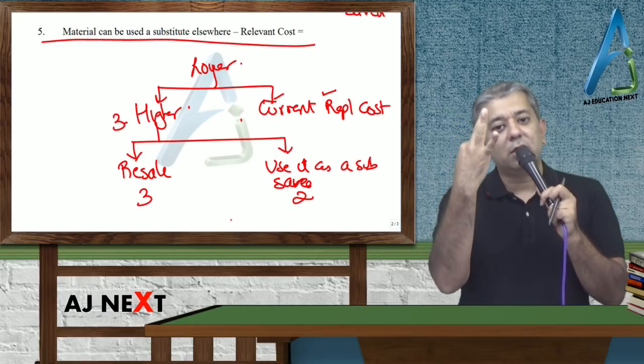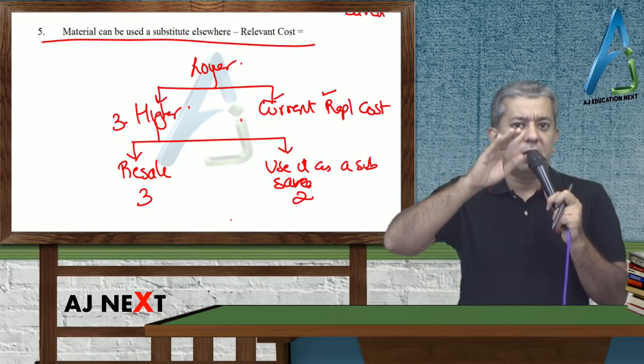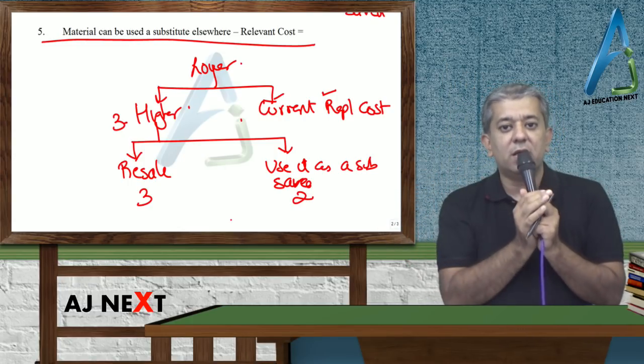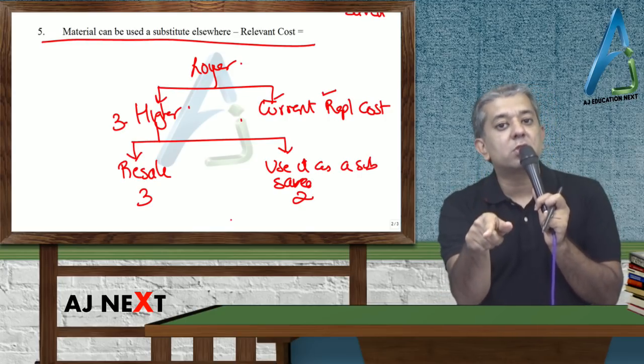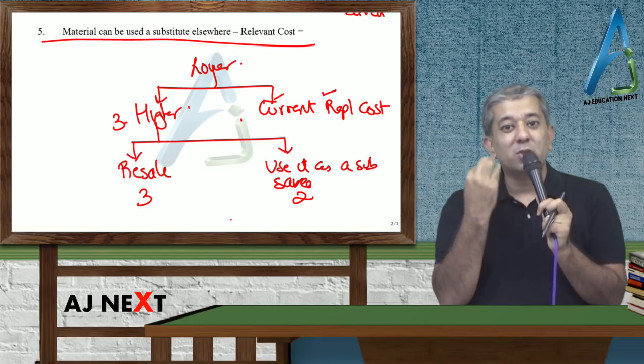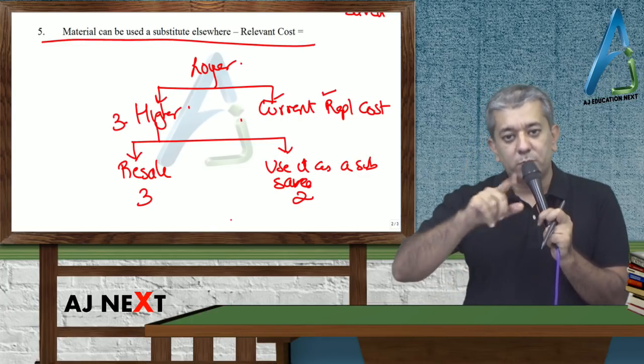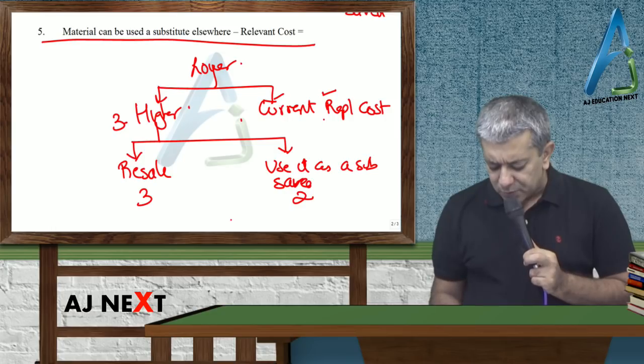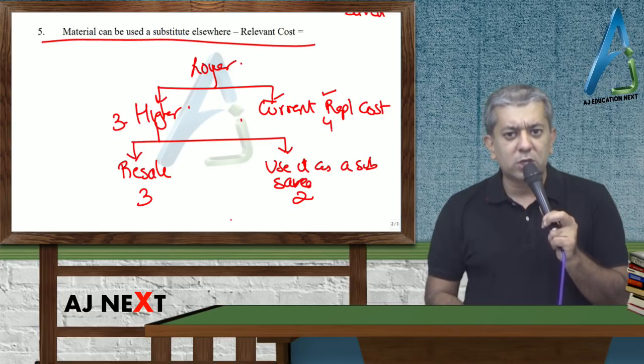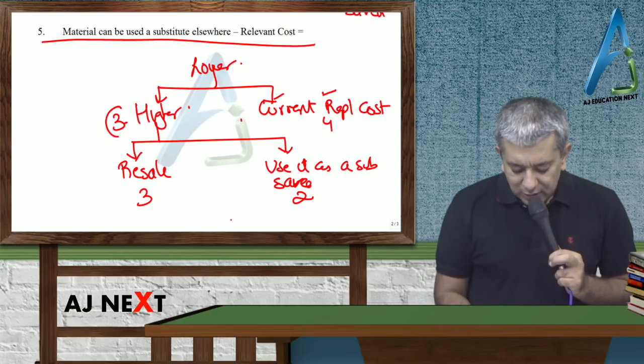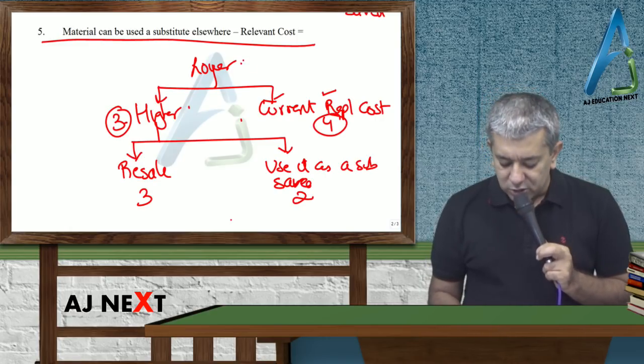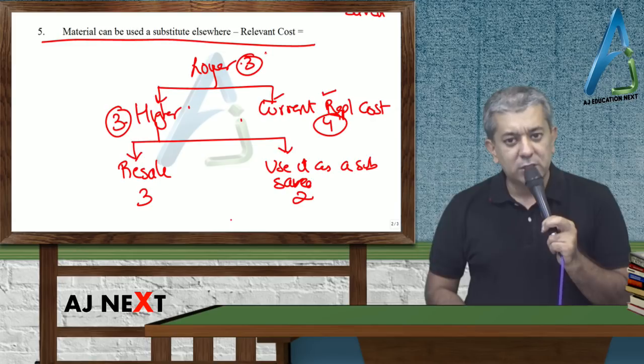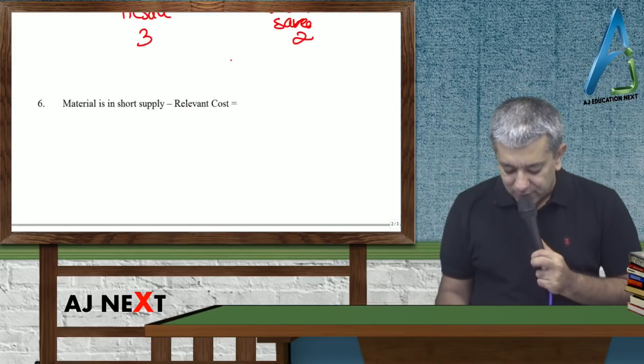Now the offer has come. Now if the offer comes, don't sell it, use it. If you use it, 3 rupees will be lost. That is one option. Second, go to the market and buy material. Suppose if you buy from the market it will cost 4 rupees. So here 3 rupees will be lost, here 4 rupees expense will be incurred. I would like to do whatever is a lower cost.